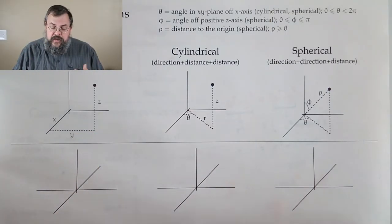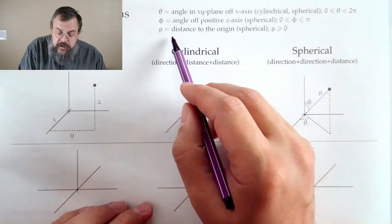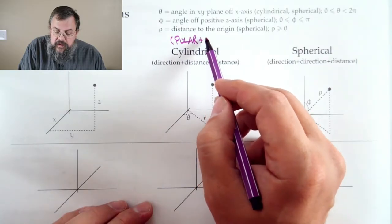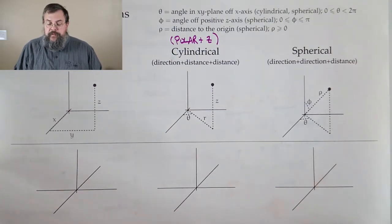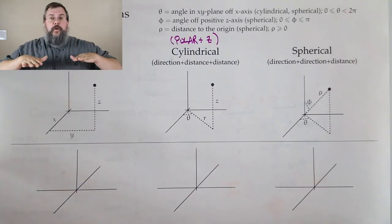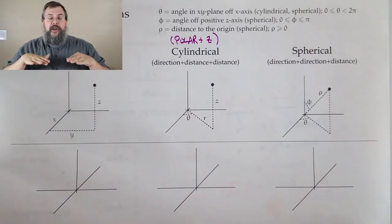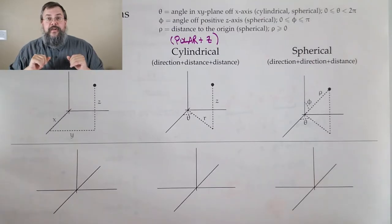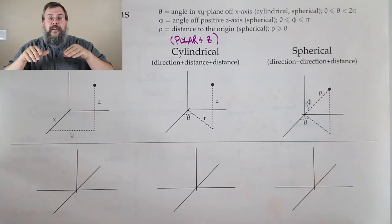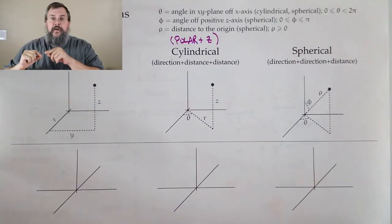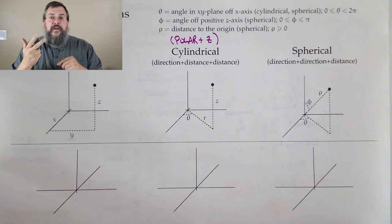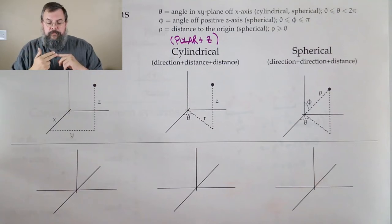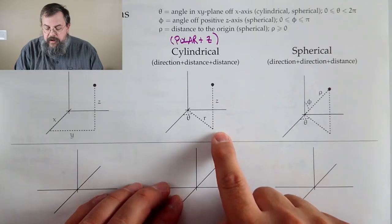Cylindrical coordinates are nicely thought of as polar coordinates plus z. To find where you are: first say where you are in the xy-plane — the floor — and describe that by r and theta, the same r and theta from polar coordinates. Then once you've found your location on the floor, move up or down by z. So there's one angle theta, and two distances: r and z. Turn by theta, come out r, come up z.